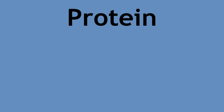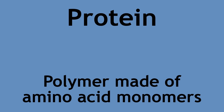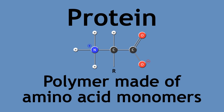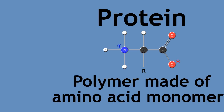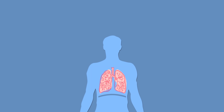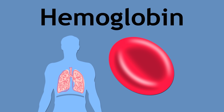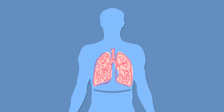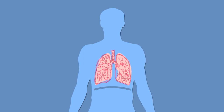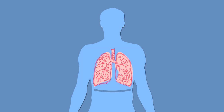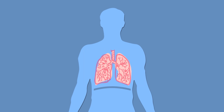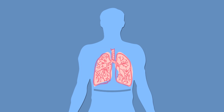Proteins are polymers made from amino acid monomers. There are endless types of proteins, each with a unique structure and function. Breathe in — oxygen is transported through your blood by a protein called hemoglobin. As you inhaled, your chest rose, made possible by your chest muscles. Your muscles are a collection of muscle cells which are rich in protein chains or filaments.